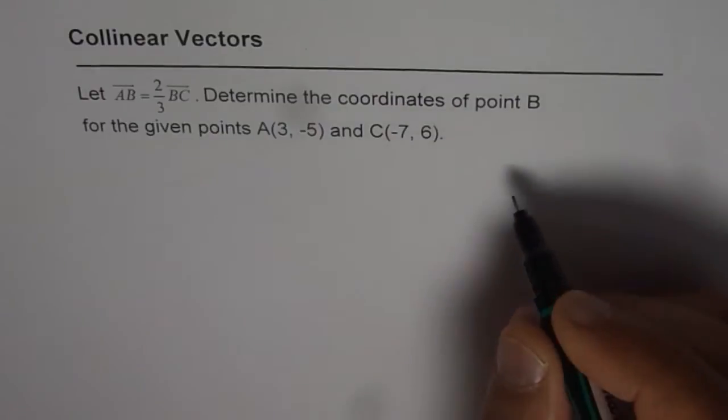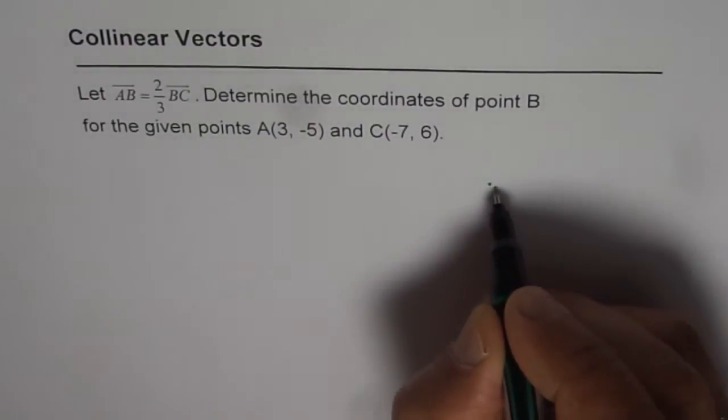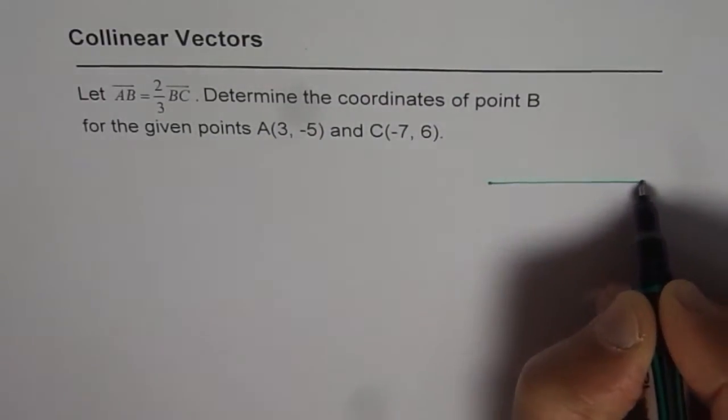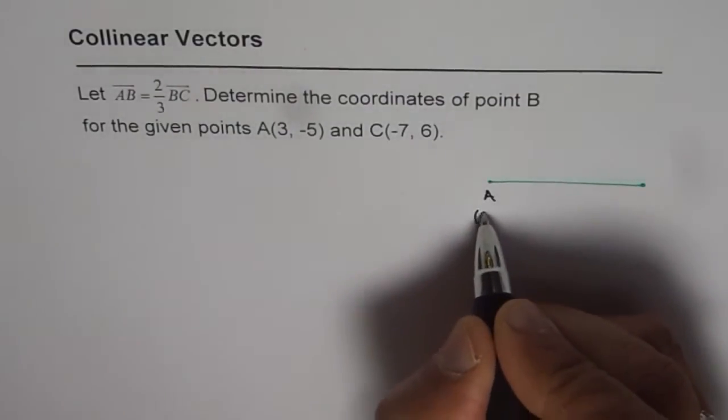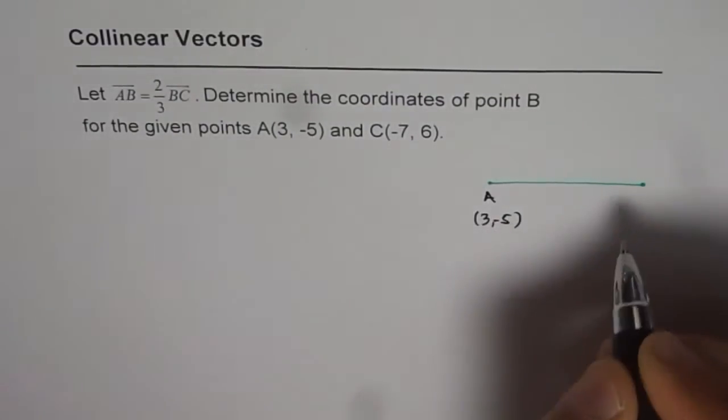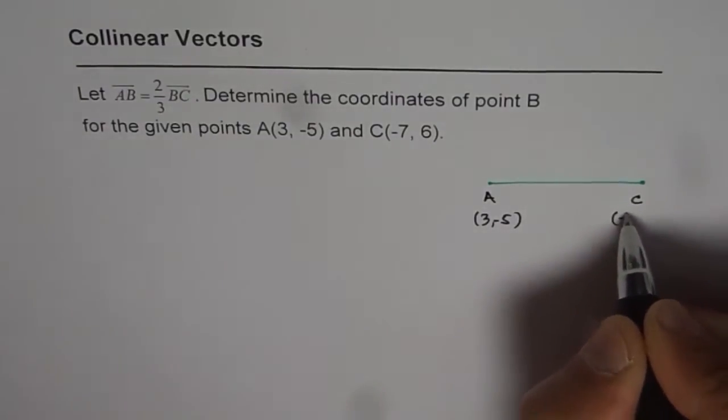So what we are given here is these two points A and C. A is 3, minus 5, and C is given to us as minus 7, 6.